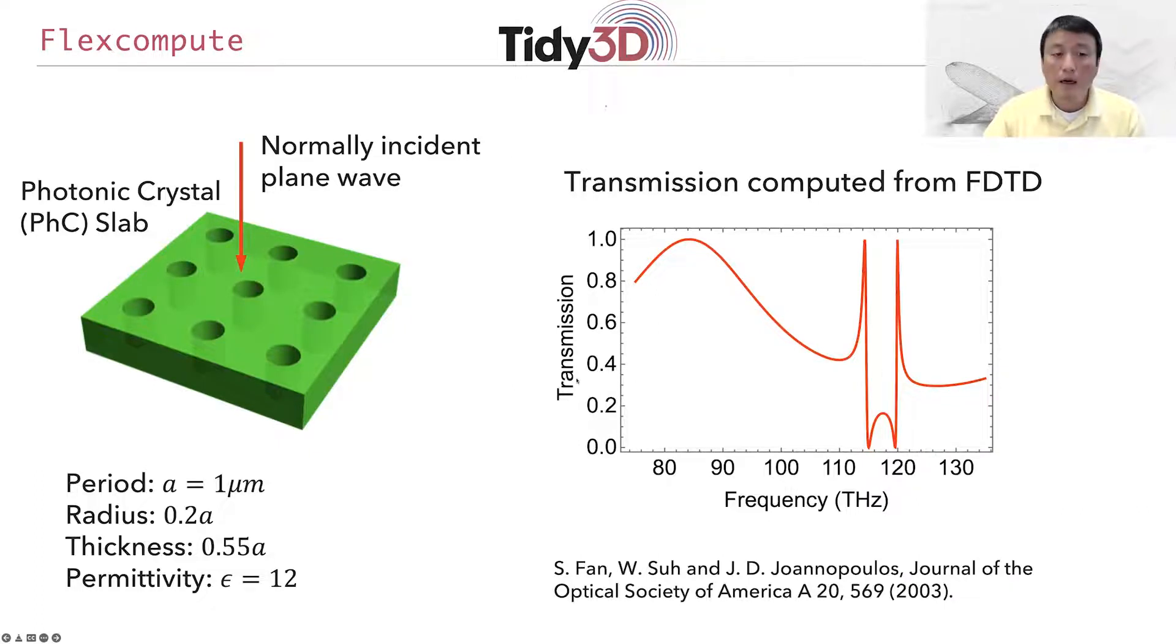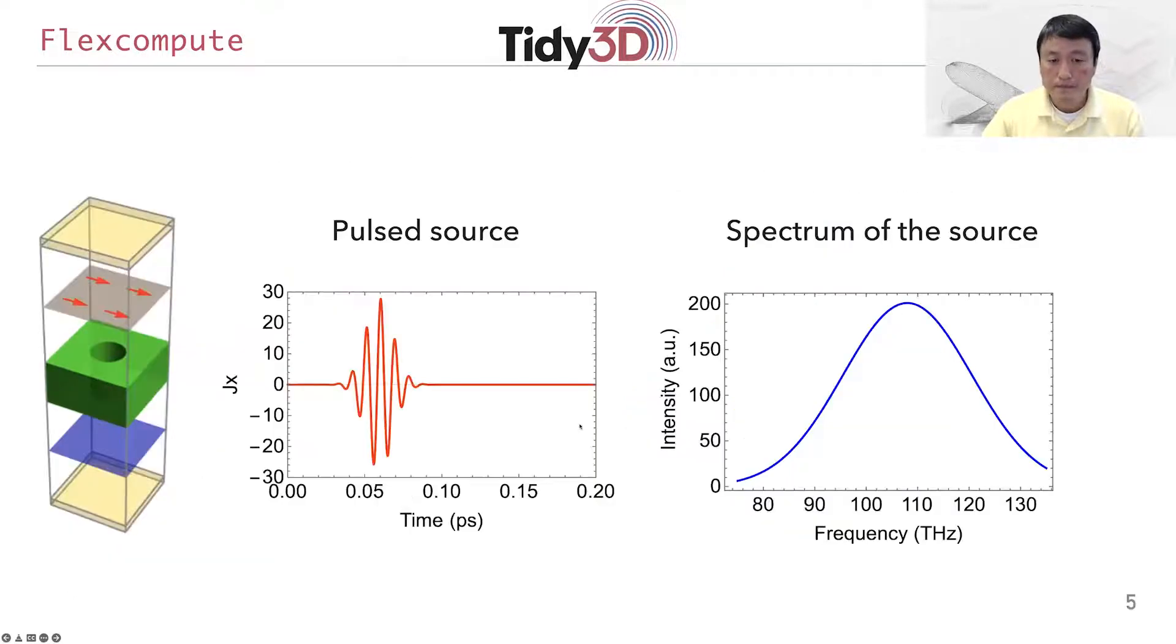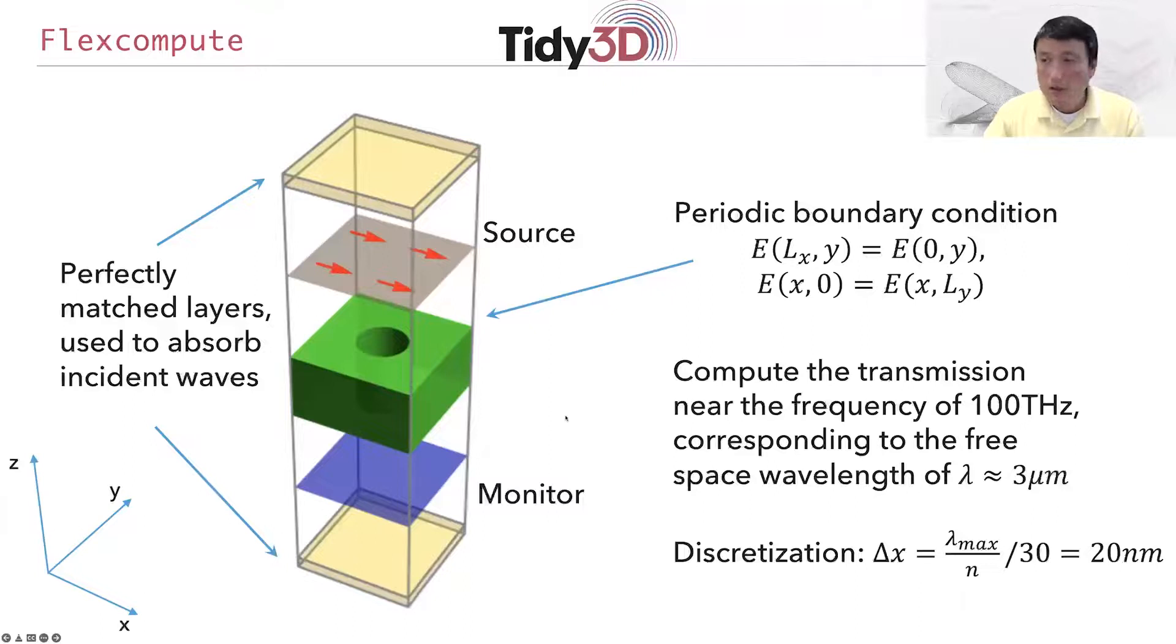So let's start. As a first step, we'll need to set up the computational cell. Here we're considering a structure that's infinitely periodic in the XY plane. And so as is typical, we're going to choose the computational domain to be only a single unit cell of this infinitely periodic structure. This is how the computational domain looks like. At the middle here is a single unit cell of the structure.